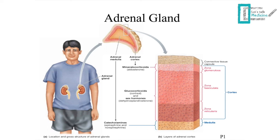In this diagram we can see the location of the adrenal gland. It is a retroperitoneal structure and it sits above the superior pole of both kidneys. If we take a cross-section to see the different layers of the adrenal gland, we can see it is divided into two main layers: the cortex and the medulla.